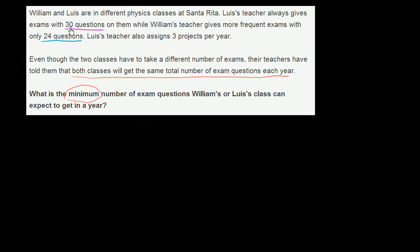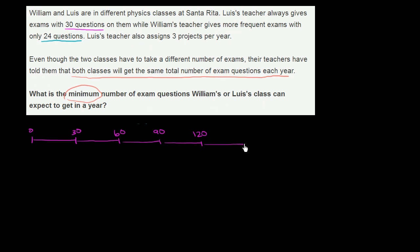So let's think about what's happening. If we think about Luis's teacher, who gives 30 questions per test: after the first test he would have done 30 questions, after the second test 60, after the third test 90, after the fourth test 120, and after the fifth test he would get to 150 total questions. We could keep going, looking at all the multiples of 30. We're looking at multiples of the numbers — we want the least multiple. So that's with Luis.